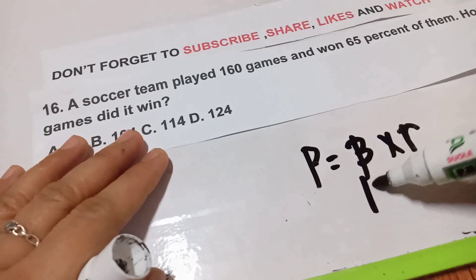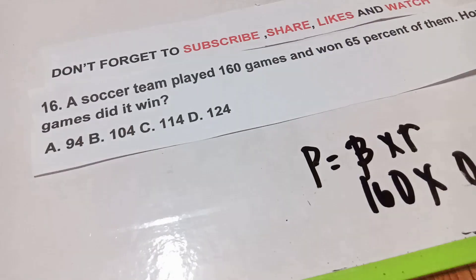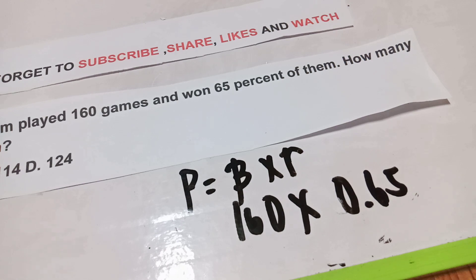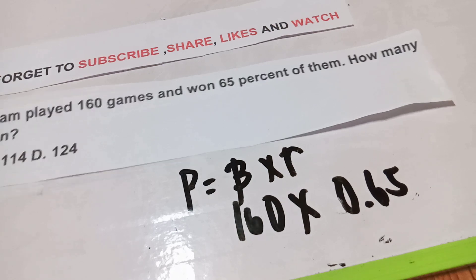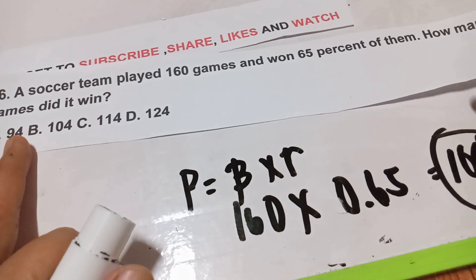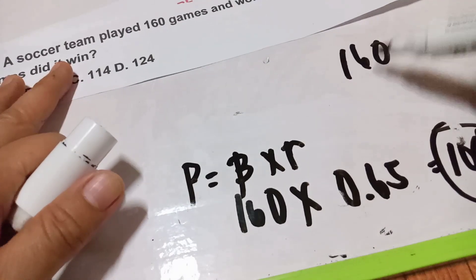So to get the games won, we have 160 games and we multiply by 0.65. The calculation is 160 times 0.65, and the answer is 104. So the answer is letter B. 104 is the total winnings of the games.